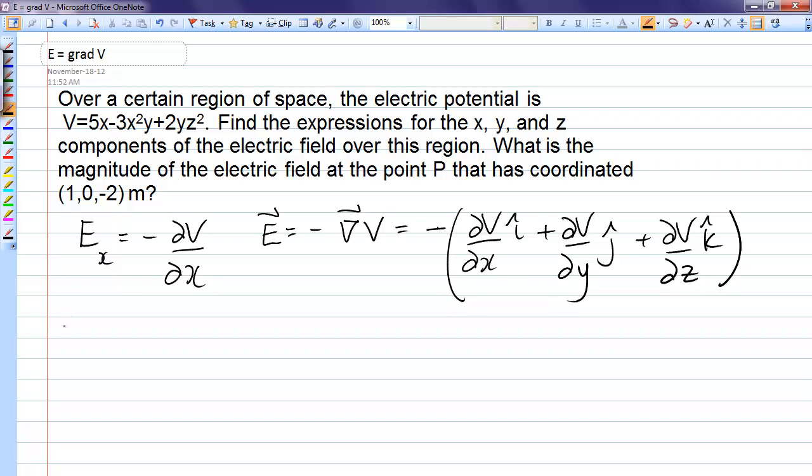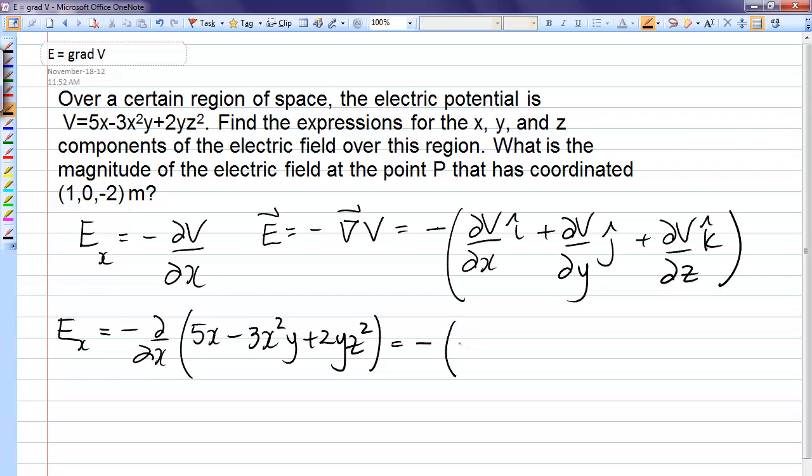So let's go ahead and work out each component. We simply take the derivative of V with respect to x, treating y and z as constants. Let's write our function out here, and taking the derivative just with respect to x, we get 5 minus 6xy.